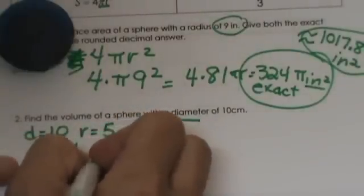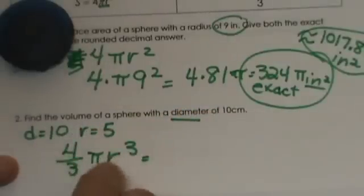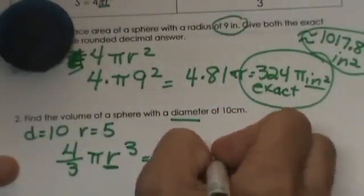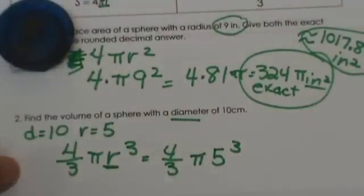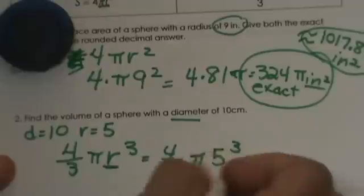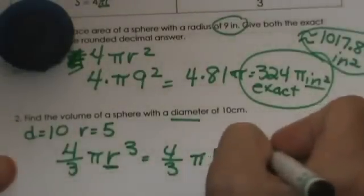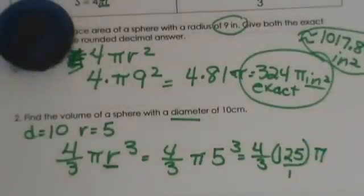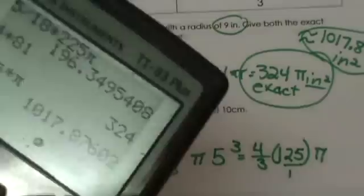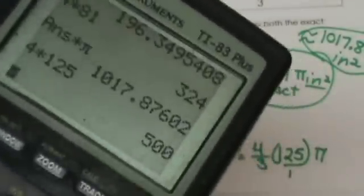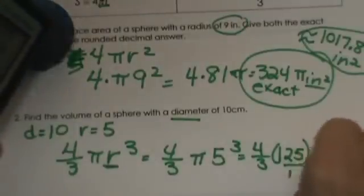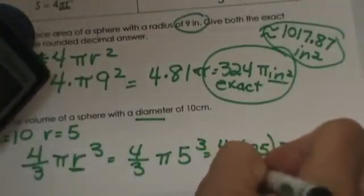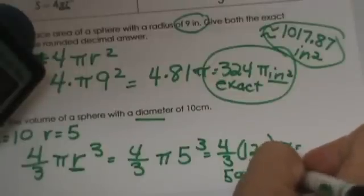We write our formula down: 4/3πr³. Remember, I told you a lot of times students forget to cube that, so I'm going to have 4/3 times π times 5³. What is 5³? Please don't say 15. It is 5 times 5 times 5, which is 125. So 4/3 times 125π. When we have a whole number, we stick a 1 under it. 4 times 125 is going to give us 500 over 3. So our exact answer is 500/3π, and that is centimeters cubed.